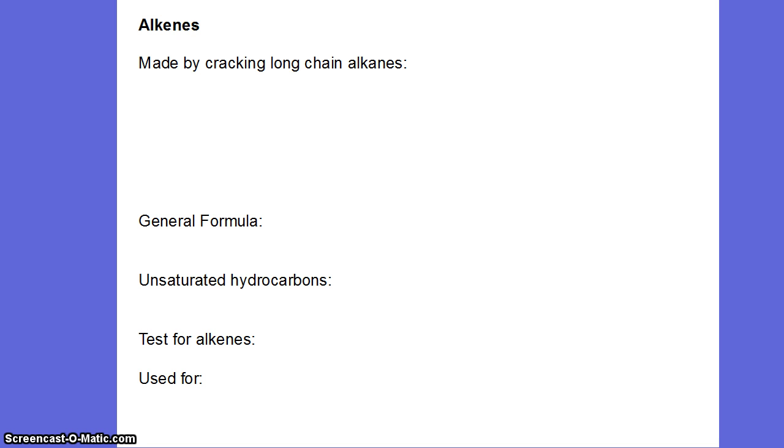Now we move on to the second of the organic homologous series, which are called the alkenes. Alkenes are slightly different to alkanes, but they're made by cracking long-chain alkanes. Cracking means chopping up. Long-chain alkanes aren't particularly useful. We've got too much of them, so we can take these surplus long-chain alkanes and chop them up, crack them into shorter alkanes and alkenes.